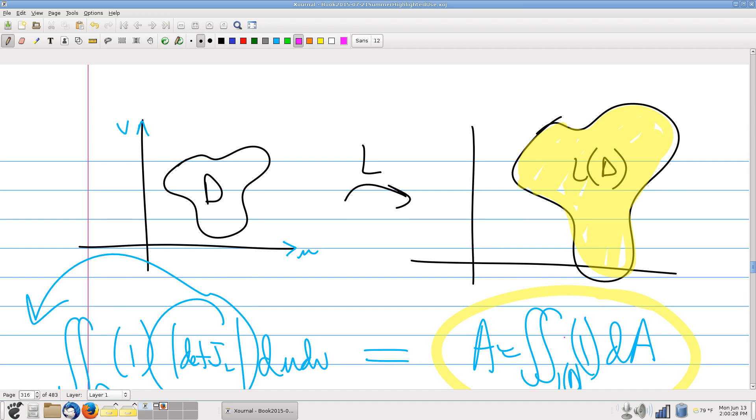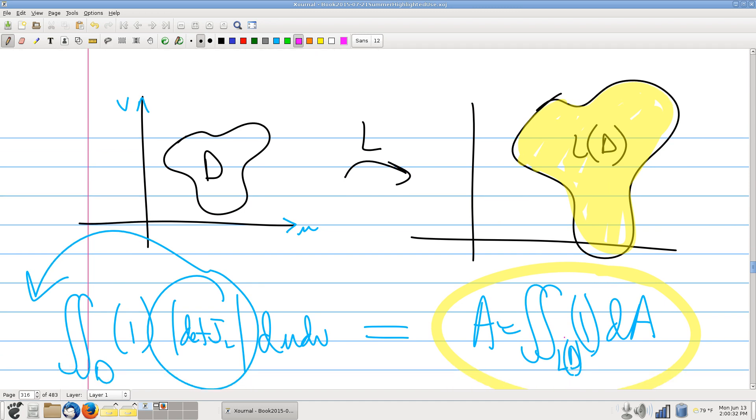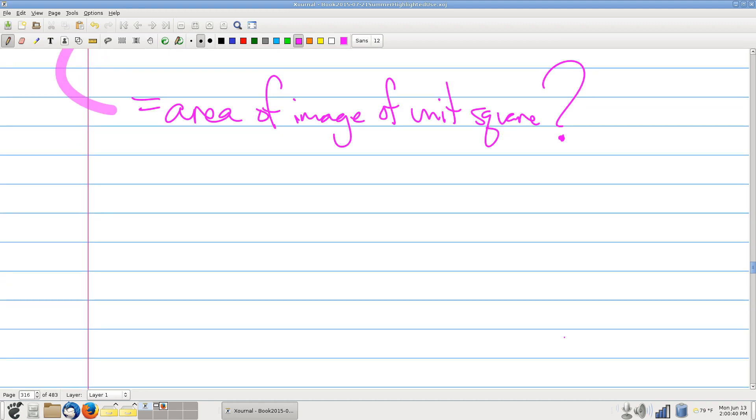And by the way, notice we kind of just did a similar calculation. We started off by looking at the area of the image of the domain D. And we went through this whole change of variables process. So I'm going to do that same process to talk about the area of the image of the unit square. So, all right. Well, let's,